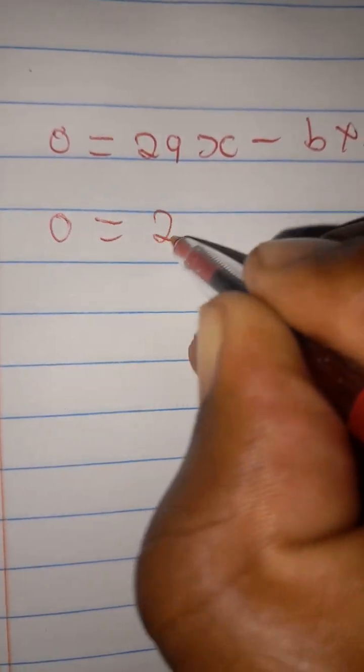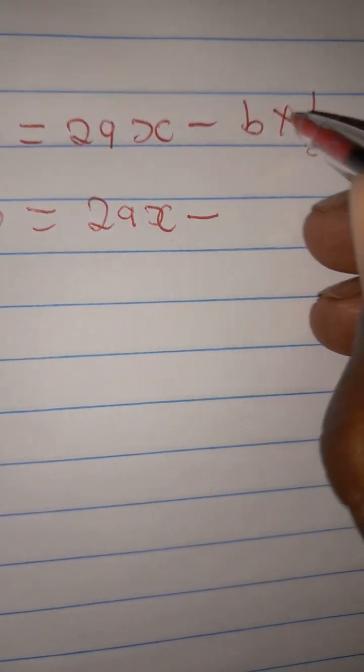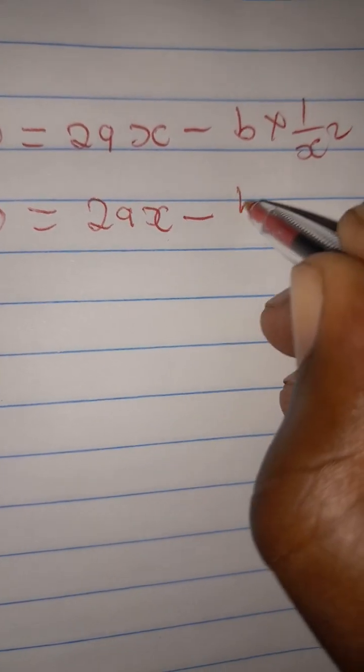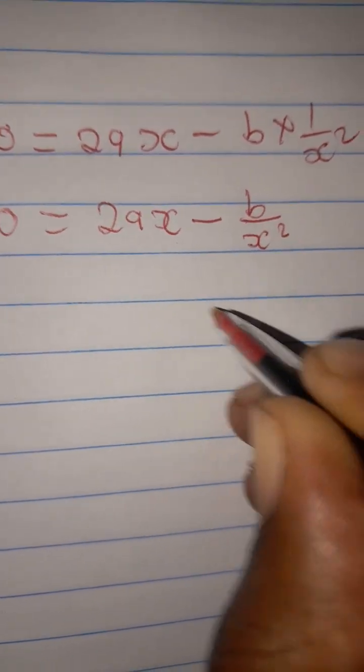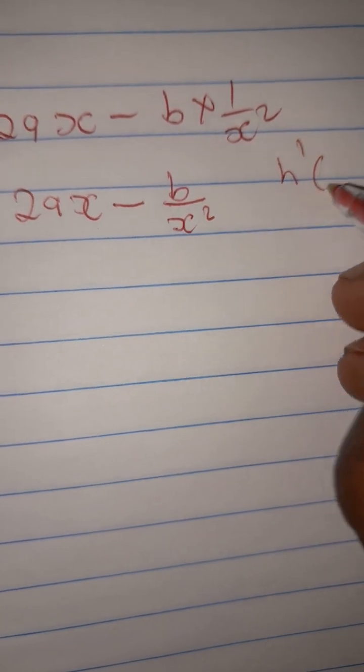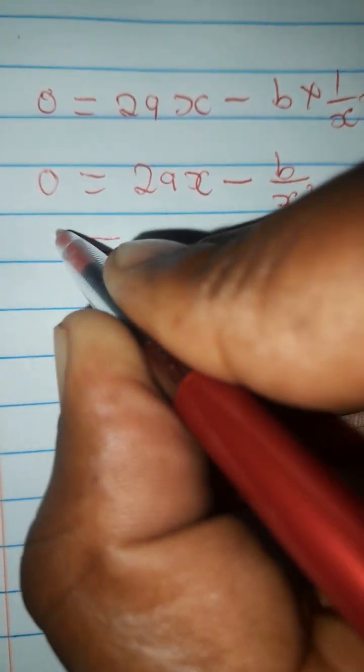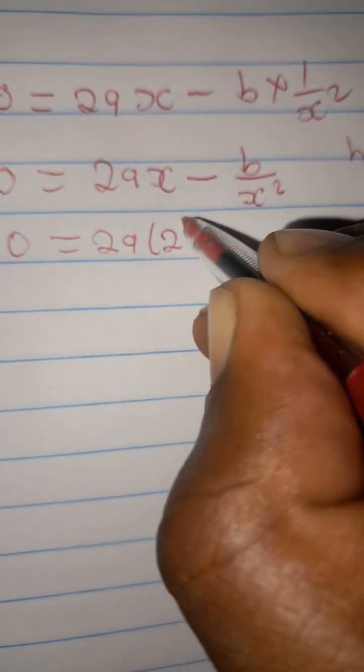In this case we are given 0 equals 2ax minus b all over x squared. We need to multiply this. Let's work it out. So when it's like this, this is what you're going to do: 0 equals 2ax minus, then b times 1 is going to be b, 1 times x squared is going to be x squared. Remember that I told you that this happens when the derivative at x equals 2 is 0, meaning that where there is x, you're going to replace it by 2.